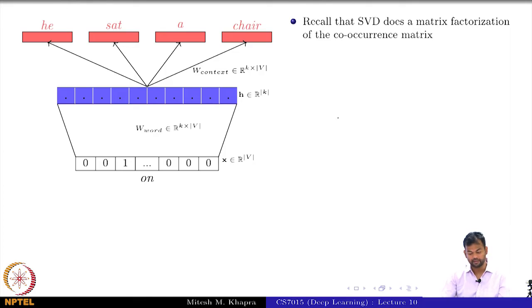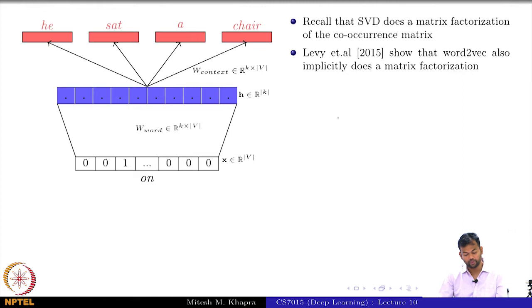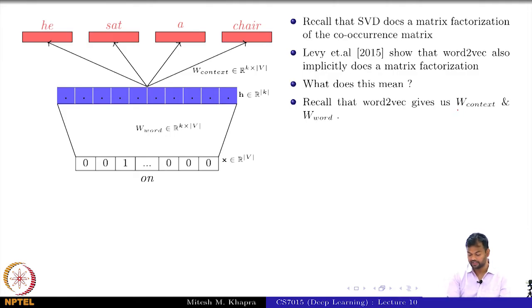Recall that SVD does a matrix factorization of the co-occurrence matrix. Levy et al showed that word2vec also does such an implicit matrix factorization. What does this mean?